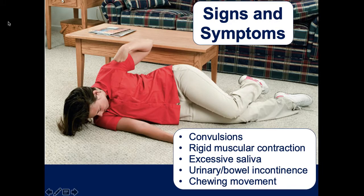Signs and symptoms of seizures depend upon the type. The grand mal tonic-clonic seizure involves flexing and extension of the muscles. Patients can have excessive saliva, foaming at the mouth, and if they bit their tongue, it could be bloody foam. They may have urinated or defecated on themselves. Chewing motions are more associated with partial seizures, as are repetitive movements—for example, a patient might open and close a box repeatedly for five minutes.